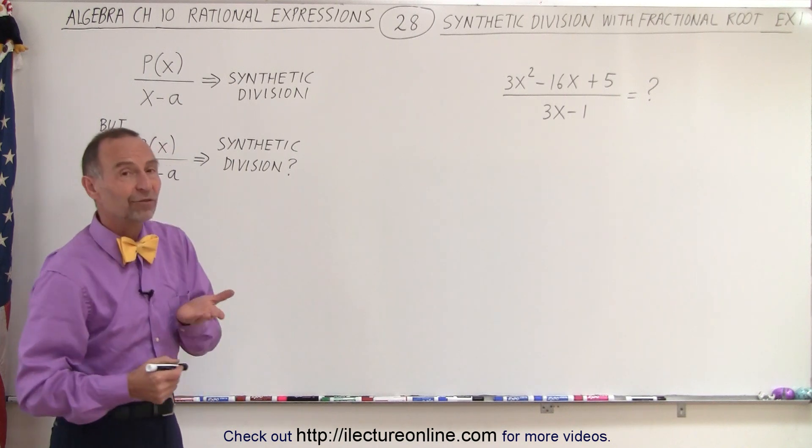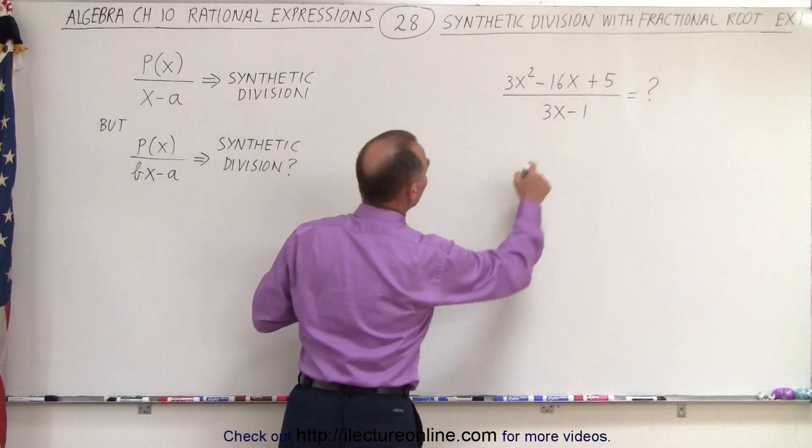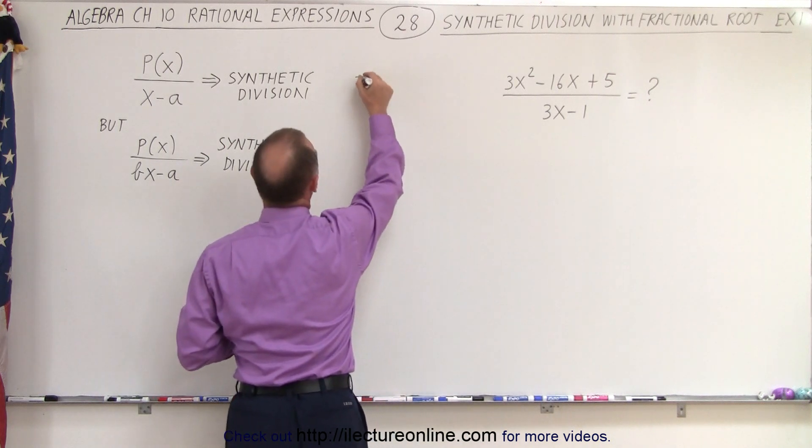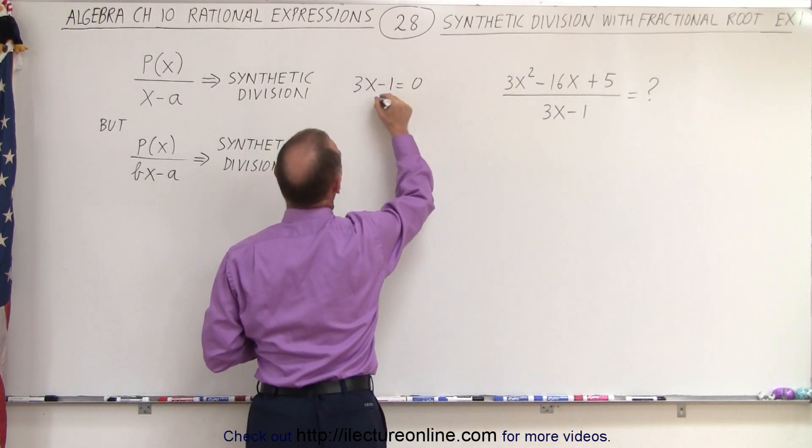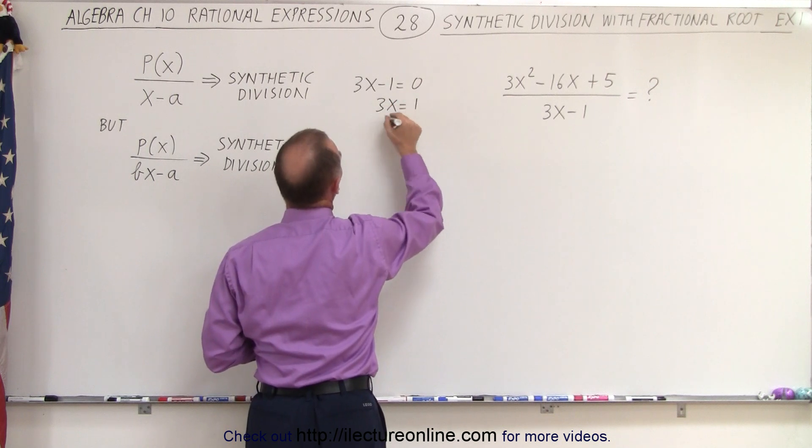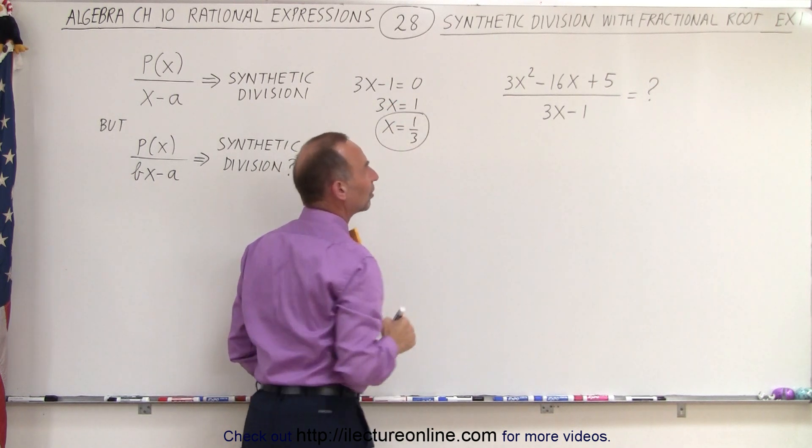So first, what we're going to do is find the root. So to find the root, we set the denominator equal to 0. We have 3x minus 1 is equal to 0. 3x equals 1. x equals 1 third. And that's the root we're going to use in our synthetic division.